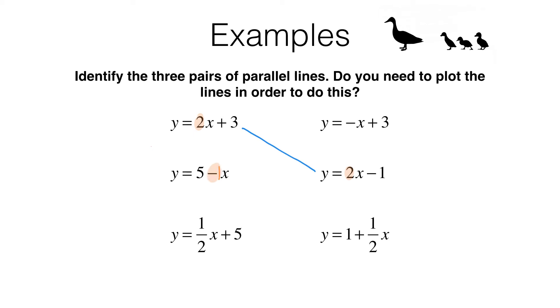Now is there another equation where the coefficient of x is negative 1? And the answer is yes it's this one here. Again we've got this invisible number 1 there. This is y equals negative 1x plus 3. That negative 1 is telling us that we've got a gradient of negative 1 and that means these two lines are parallel.